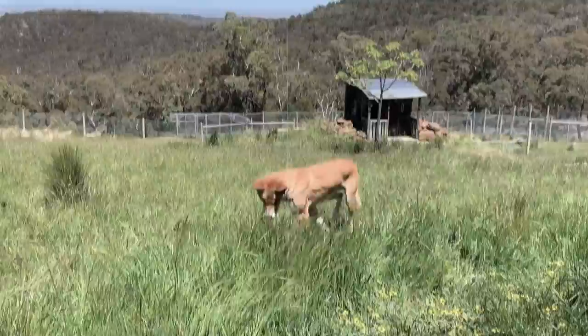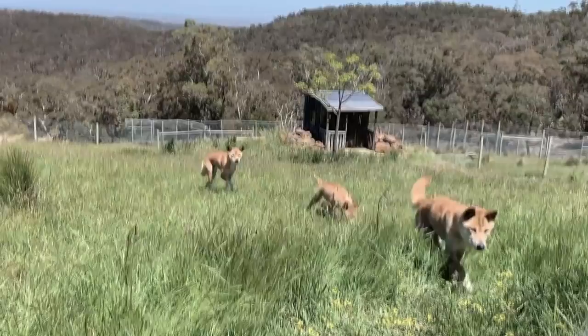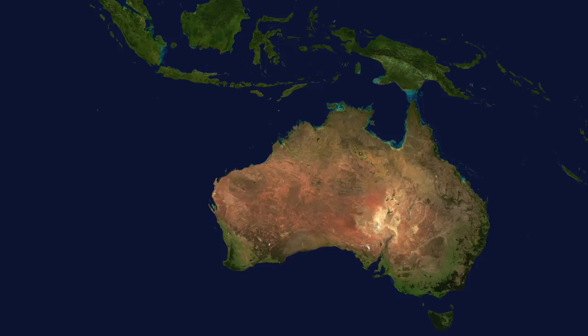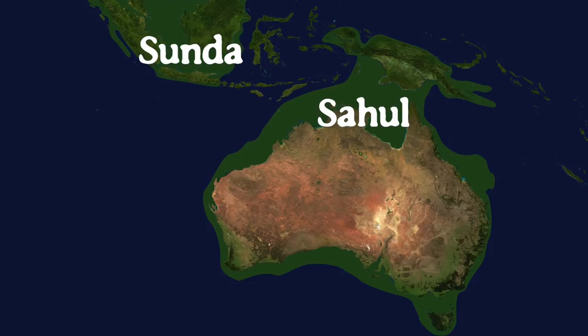Before we can understand where and when dingoes originally came from, we need to know a bit about how the Australian and Southeast Asian region looked around 18,000 years ago. Back then, Australia and New Guinea were joined in a landmass called Sahul, while much of Southeast Asia was joined into a landmass called Sunda. Using DNA, it's been shown that the dingoes' ancestors probably first originated in Sunda.